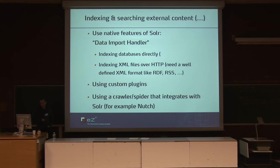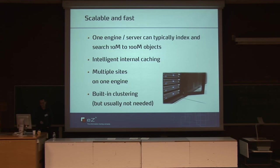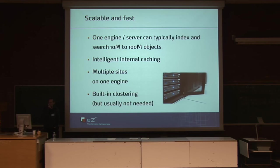The native features of Solr are already very powerful, or you can write custom plugins or use Nutch — it's a really cool project. Solr itself is very scalable and fast, although some people always tell me this is Java so it must be slow. But on the server side, when the HotSpot compiler kicks in, it becomes really, really fast. Benchmarks that we and others have done show that a normal server can easily serve an index of 10 to 100 million objects with typically five search requests per second.